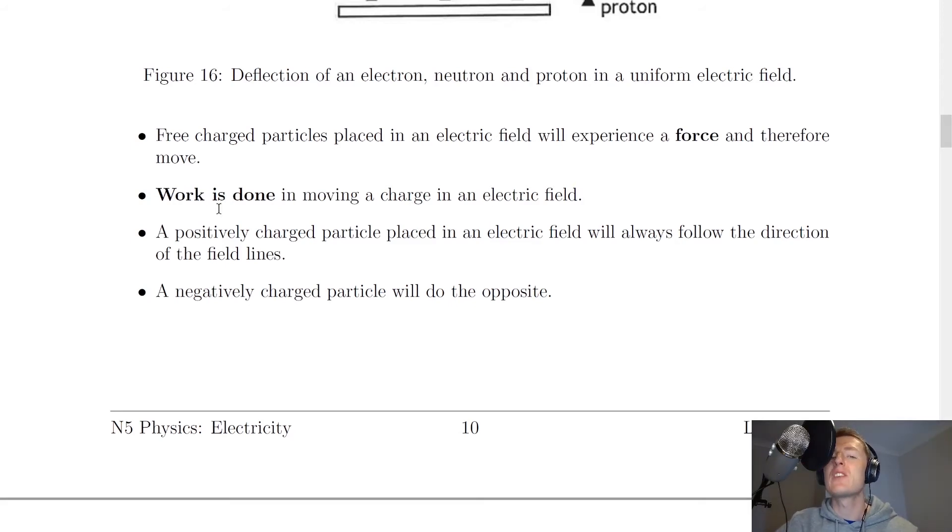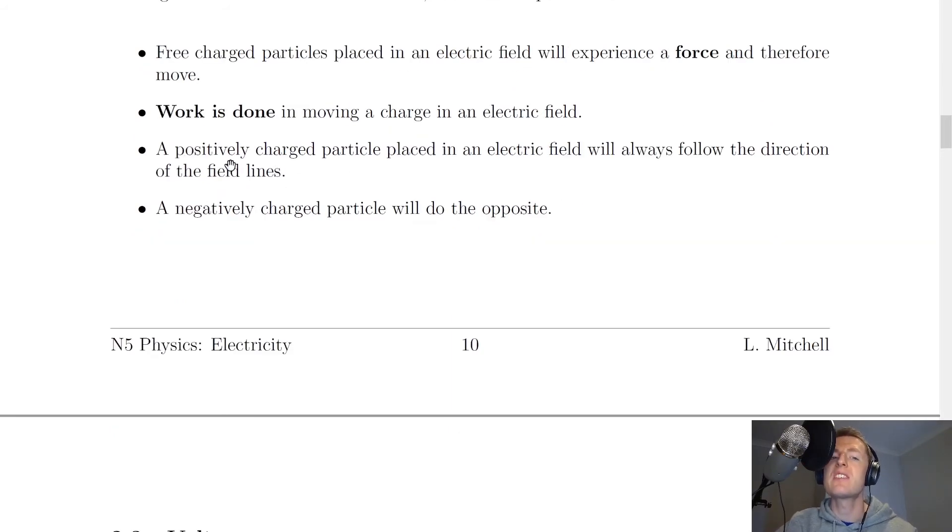It then says that work is done in moving a charge in an electric field. Now work done is a type of energy that you'll meet in the dynamics topic, but it's saying here that energy is needed to move the charge and it's actually a force that is causing this deflection. And lastly, it says that a positively charged particle placed in an electric field will always follow the direction of the field lines.